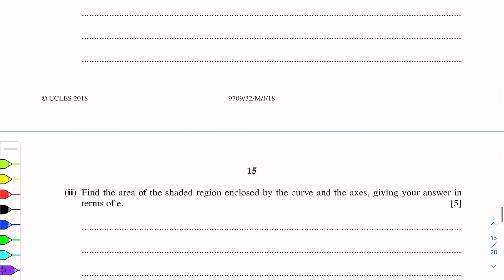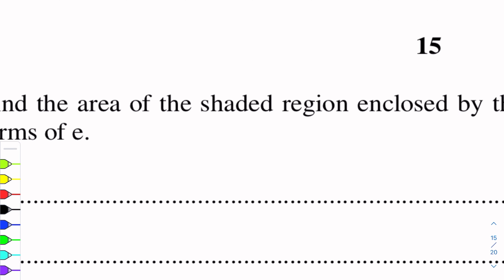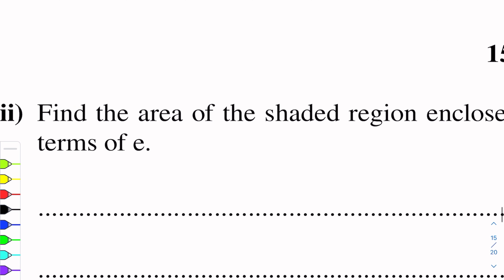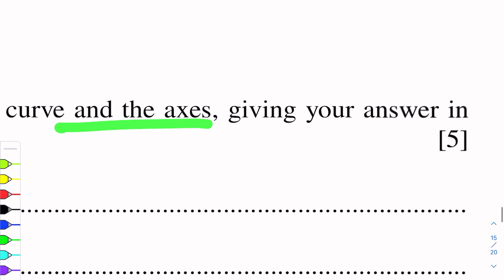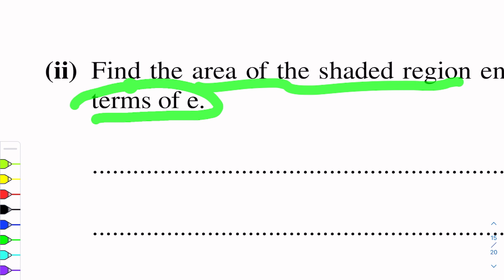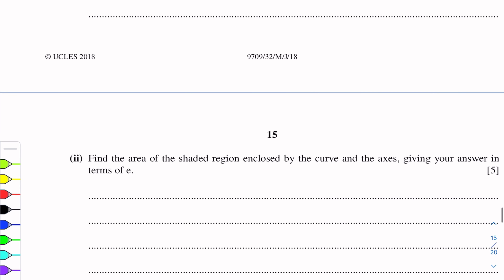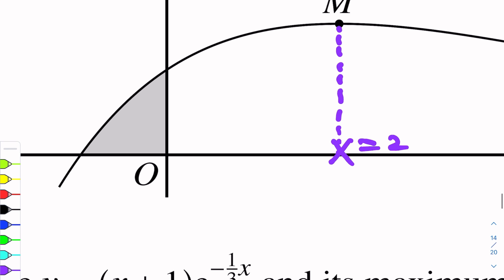Next part of this question: Find the area of the shaded region enclosed by the curve and the x-axis, giving your answer in terms of e. The shaded region is clear in the diagram — it is bounded by the x-axis and this part of the curve.